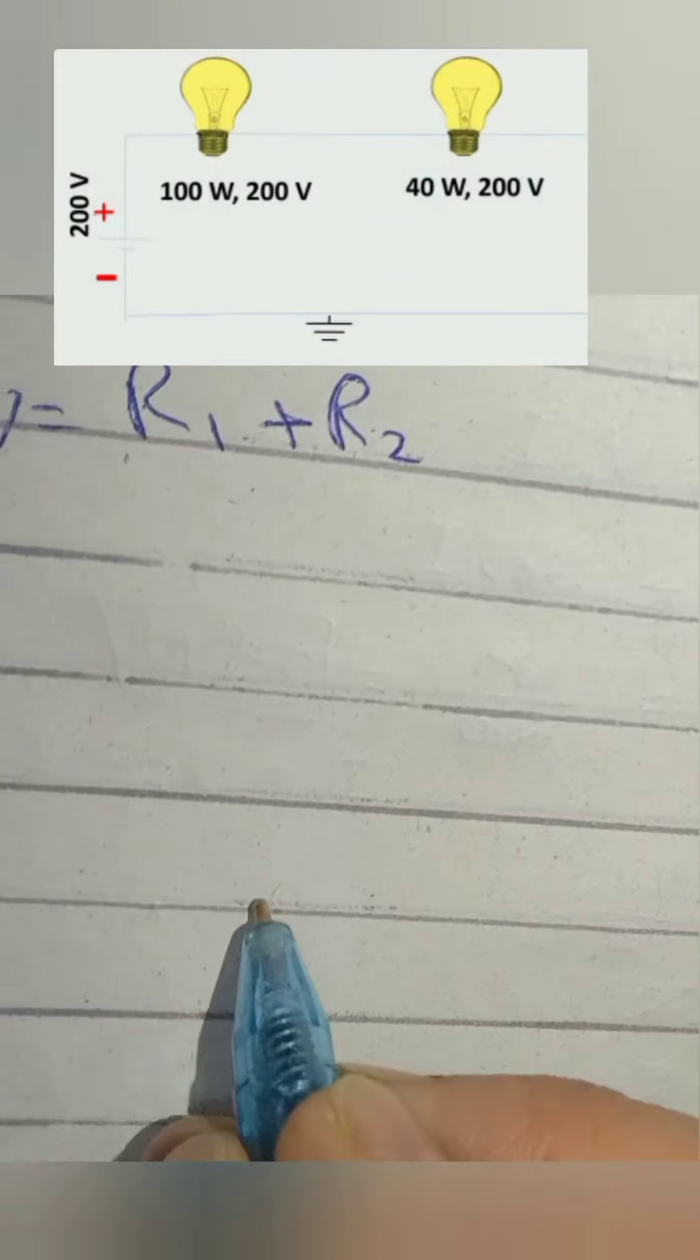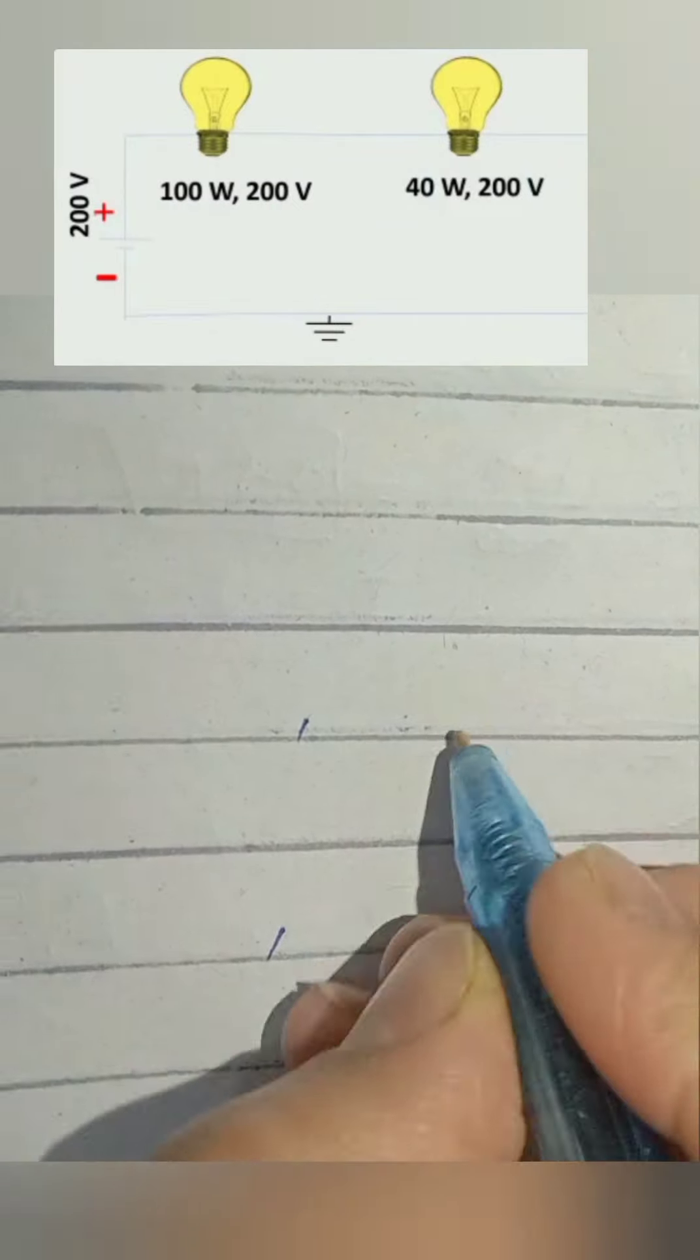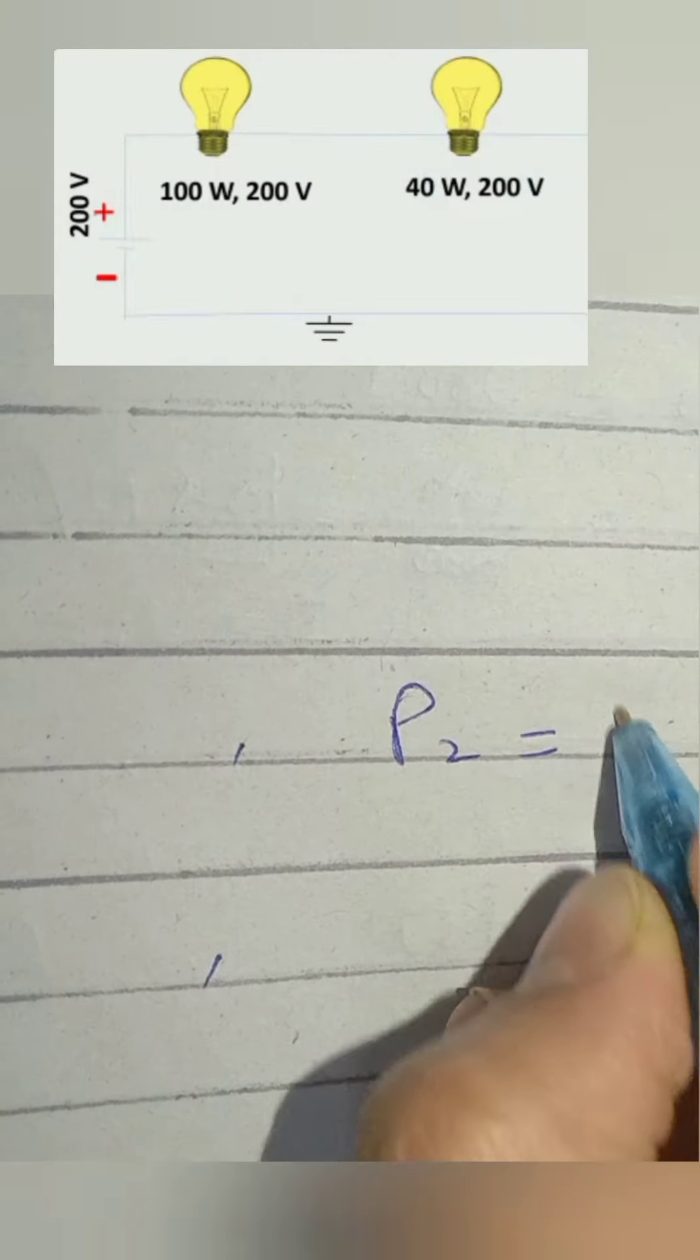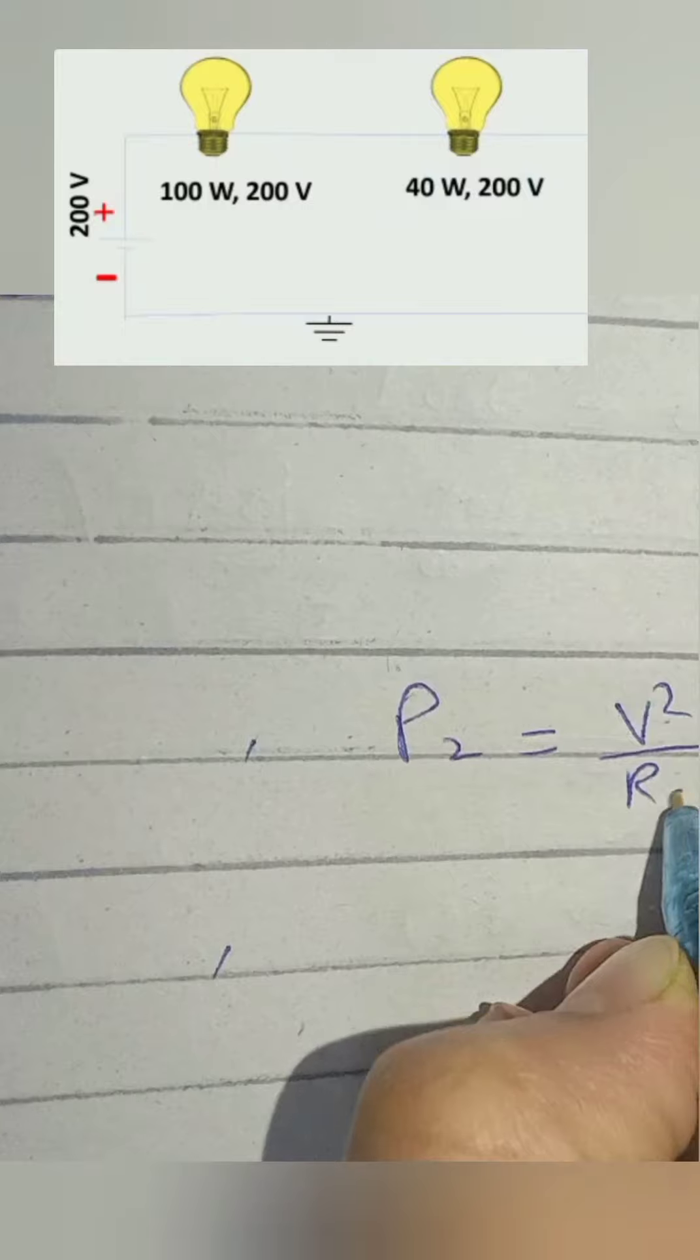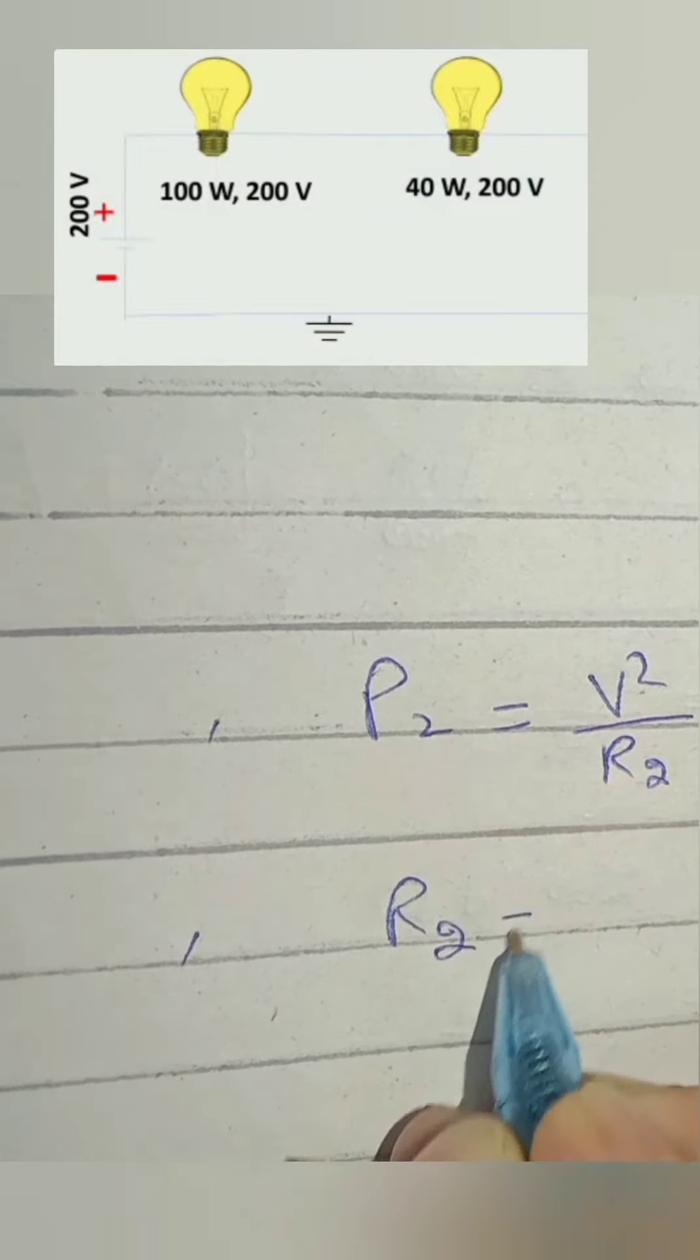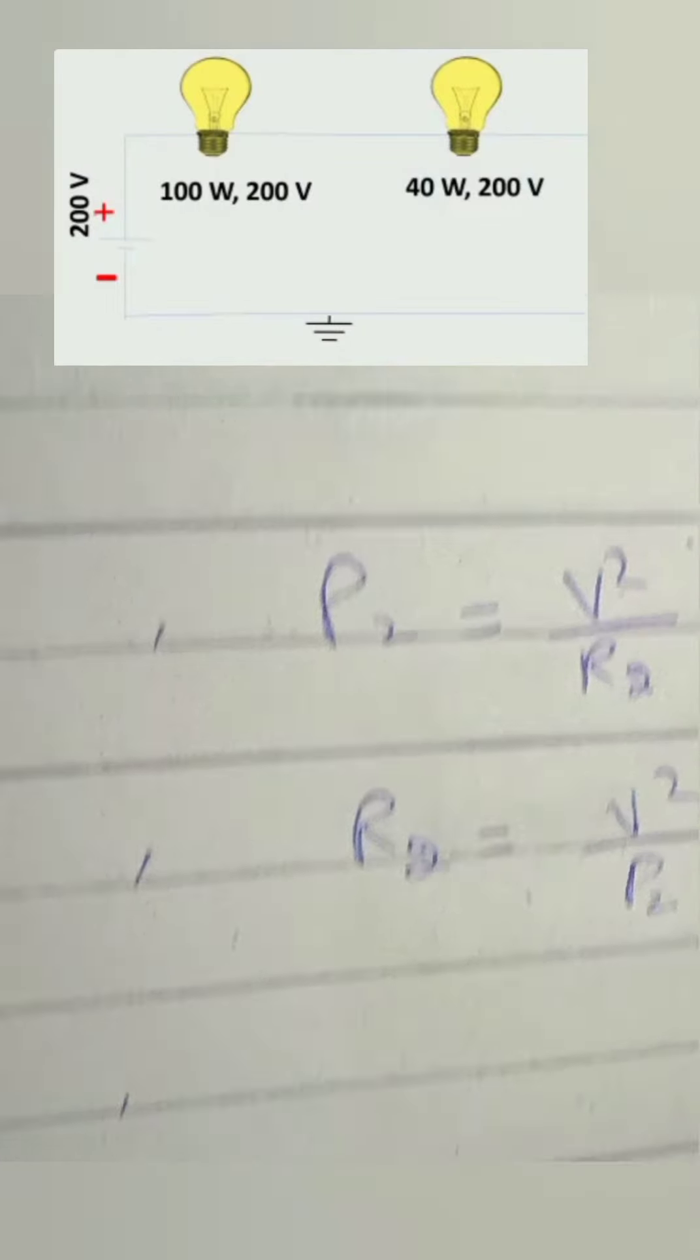Now we have to calculate the resistance of second bulb by using the same formula. We will write P2 equals V square over R2. Rearrange the equation for R2, we get R2 equals V square over P2.